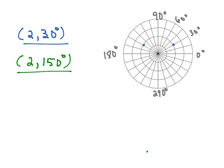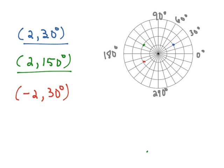It's also possible for our R value to be negative. For example, if we wanted to graph negative 2, 30 degrees, we're going to turn toward 30 degrees, but then we're going to move backwards two units. So our red point is graphed at negative 2, 30 degrees.